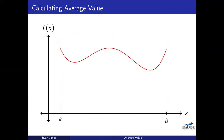If we were to look at an average value — an average height of this function — you might say there's a point that's fairly tall, a point that's fairly low, a high point, a low point, another high point. If you wanted a very rough estimate of the average y-value of this function, you could just take these five points, add them up, divide by five, and you'd have a very rough estimate of the average y-value.